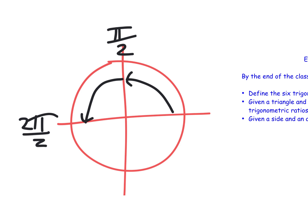Because what comes after two pi over two? Three pi over two. You need to learn how to count in radians. These are radians. So one pi over two, two pi over two, three pi over two — and can I keep going? Yes! Four pi over two.